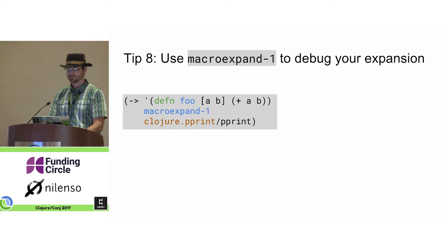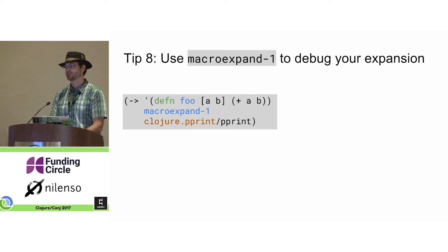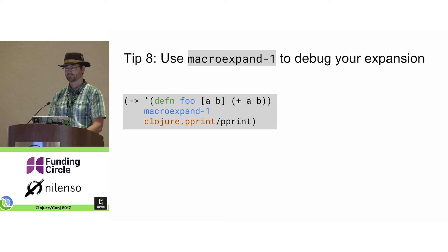Tip eight: macroexpand-one is a great way to debug a macro because it returns the expansion that you get back. I like to pass that to pprint to see what it's printing.